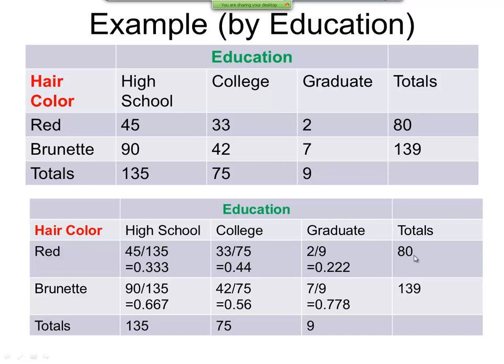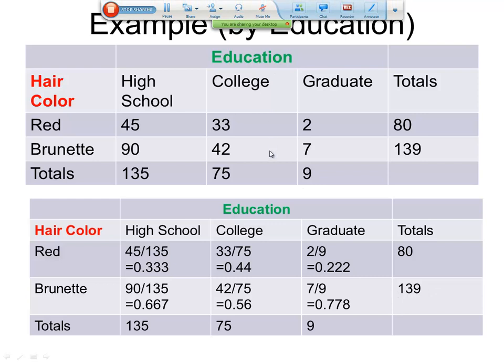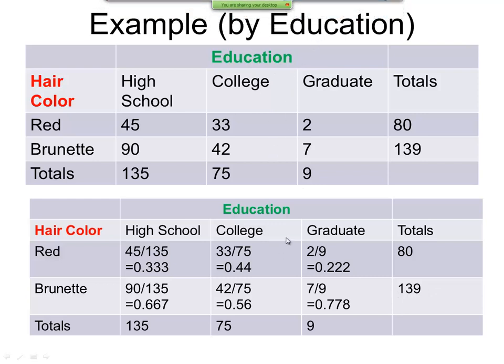Now notice I don't use the 80 and 139 at all on this one because I'm totaling it by education. Now instead, if I total this by hair color, then this one right here would be 45 divided by 80. This one would be 33 divided by 80. This would be 2 divided by 80. This one would be 90 divided by 139, 42 divided by 139, and 7 divided by 139. So you need to decide how you're studying it, by education or by hair color.